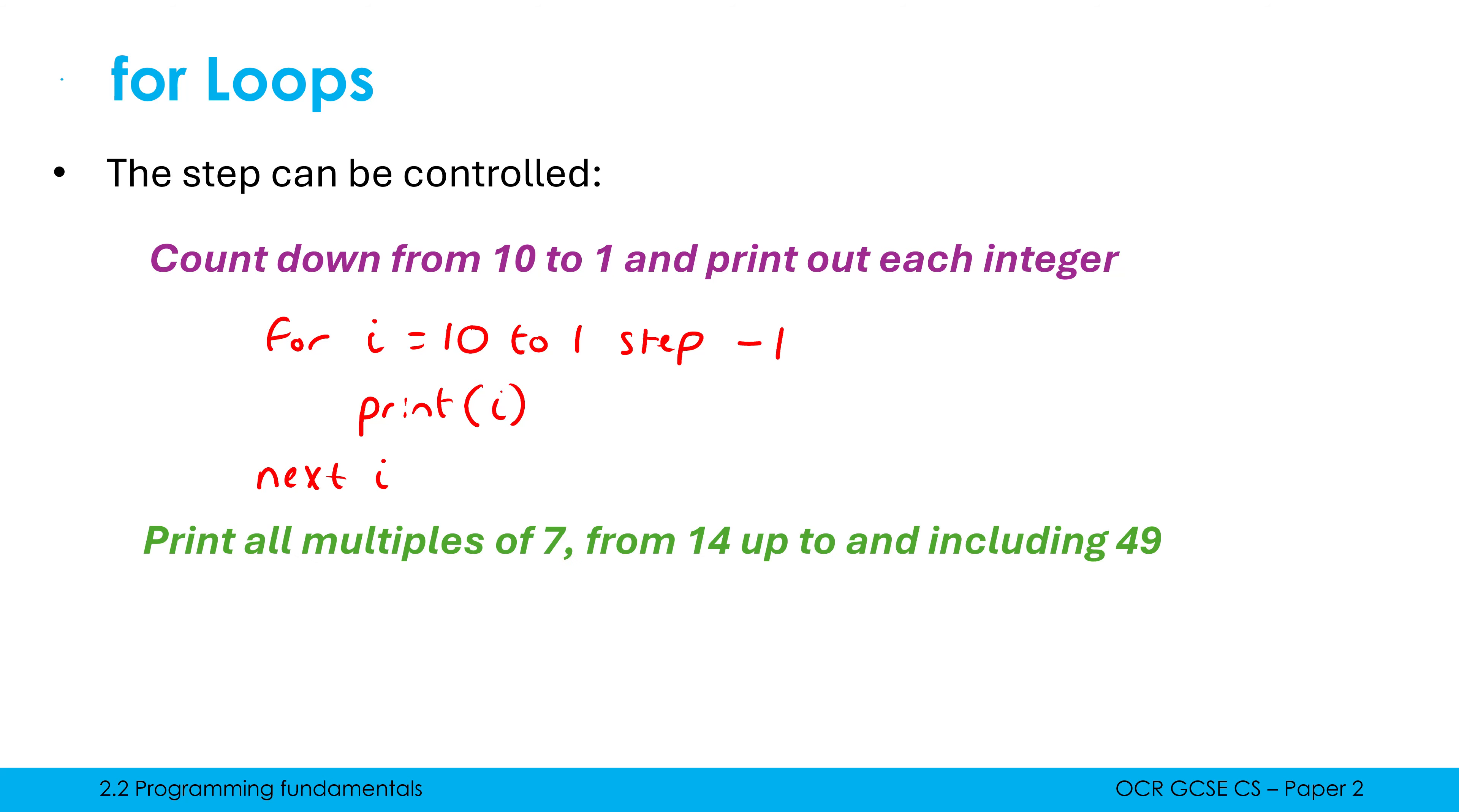How would we then now print all multiples of seven from 14 up to and including 49? Well, we're not going to do loads of print statements because that's not the video, but also that's just not very sensible. I'm going to use a for loop, of course.